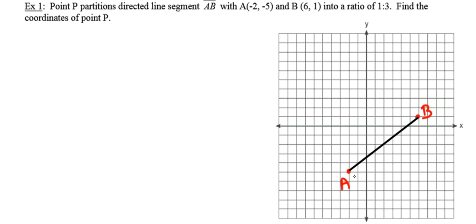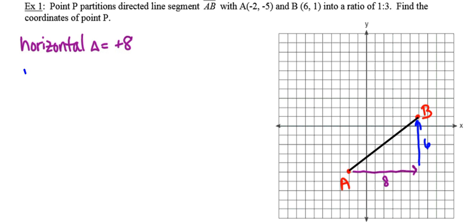Since it's directed line segment AB, I'm going to think about A as being my starting point and B as being my ending point. I'm going to think about this change happening in two ways — the horizontal change and the vertical change in moving from point A to point B. Counting up the boxes, the horizontal change is plus 8, and the vertical change — because we're moving 6 up — is plus 6.